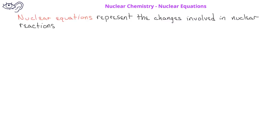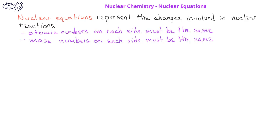In previous lessons, we learned to write and balance chemical equations to represent the changes involved in a chemical reaction, ensuring that the number and type of atoms were the same on each side. We can use nuclear equations to represent the changes involved in nuclear reactions, although with nuclear equations, it's the atomic number and the mass number that must be conserved on each side of the equation.